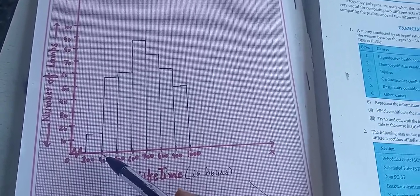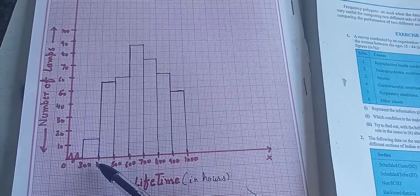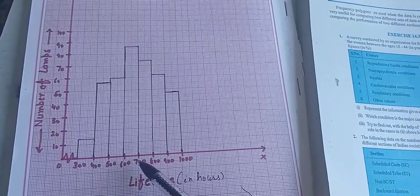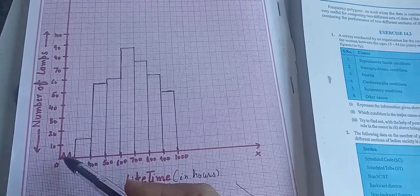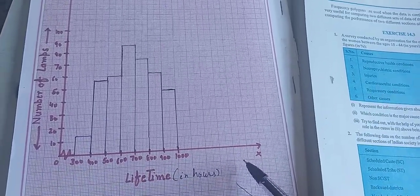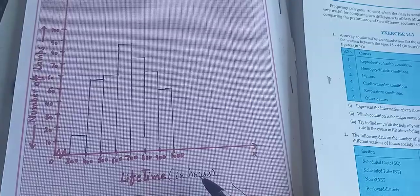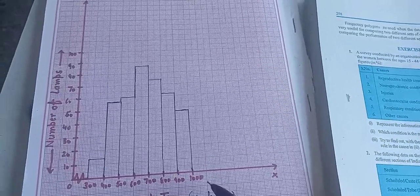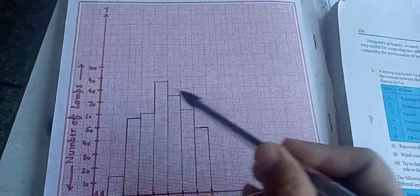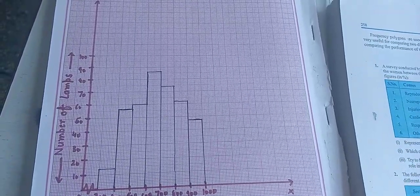So 300 to 400. Just see the gap is of 100. So 300, 400, 500, 600, 700, 800, 900, and 1000 we will be taking on x-axis. The lifetime in hours we will be taking on x-axis, and number of lamps we will be taking on y-axis. The procedure is same.